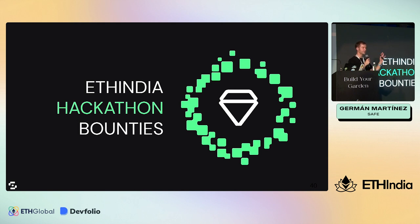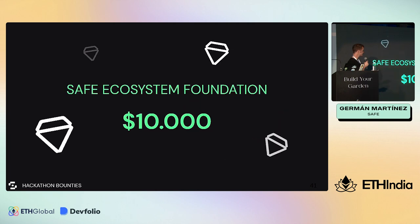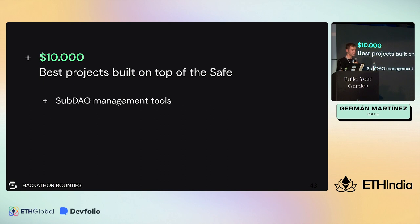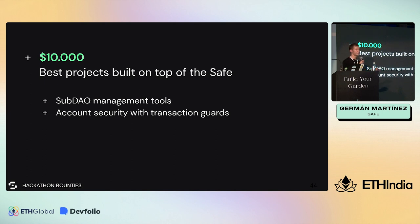That was basically it - Safe Core SDK, Safe modules, and Safe transaction guards. Now what you're all expecting: what are our bounties for this hackathon? The Safe Ecosystem Foundation has $10,000 up for grabs, given to the best projects built on top of the Safe. It is an open bounty, so everything built on top of it applies. Some suggestions: a sub-DAO management tool - DAOs like to have sub-DAOs with different funds and it would be great to have a tool for all the accounting. Improving security with transaction guards - anything like deny lists or allow lists. Everything you can think of.